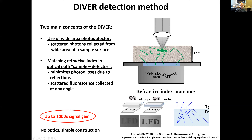Here's a simple demonstration of index matching. If you look through a stack of microscope slides, the image appears pretty dark because of multiple reflections between the glass surfaces. But if you fill the air gaps with water, the image becomes much brighter. These two principles of the DIVER detection method — wide-area detector and index of refraction matching — give us a signal gain, depending on imaging depth, of about three orders of magnitude as we measured. And this method is pretty simple — practically no optics, very simple construction. Everybody can do it.